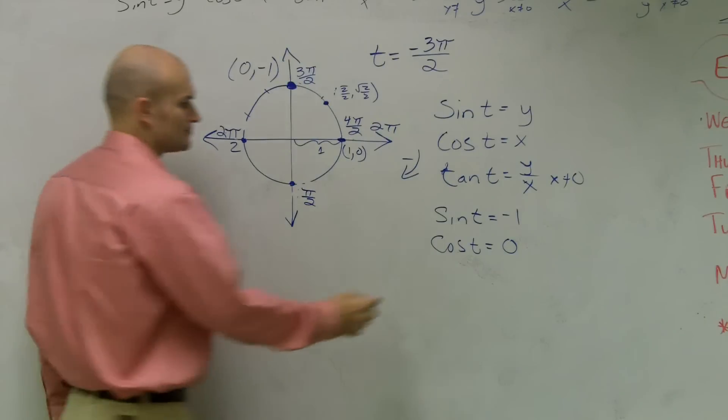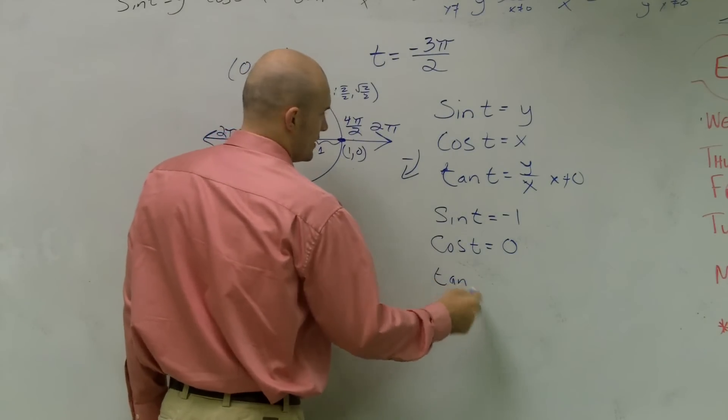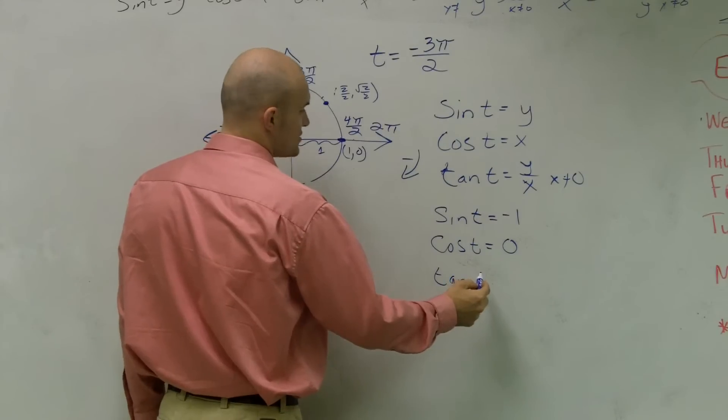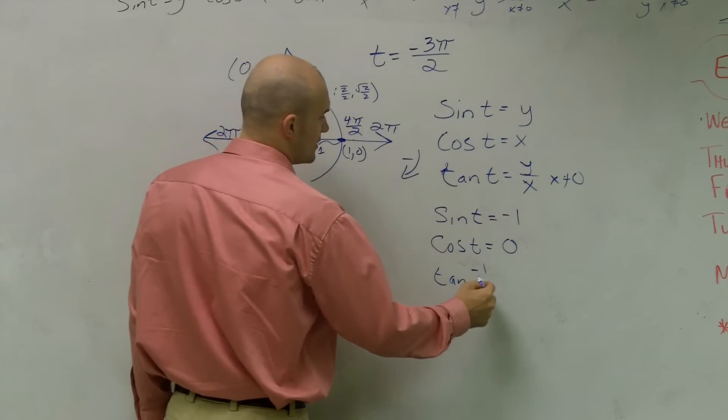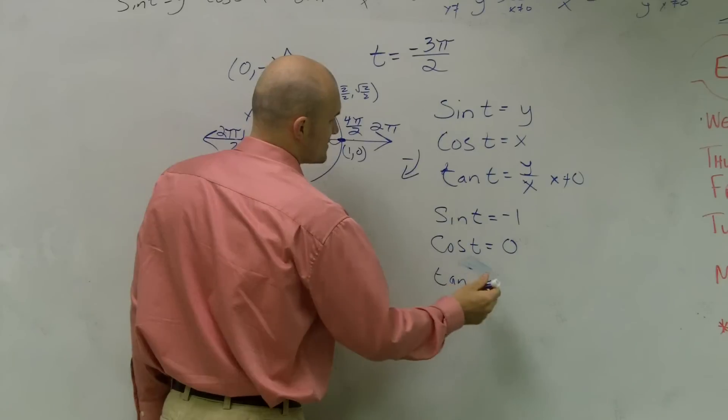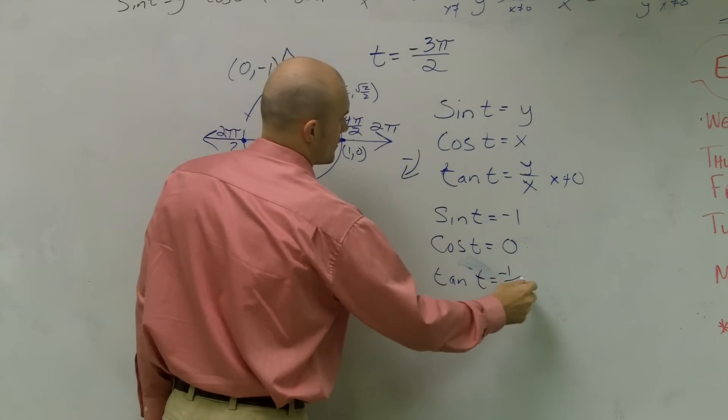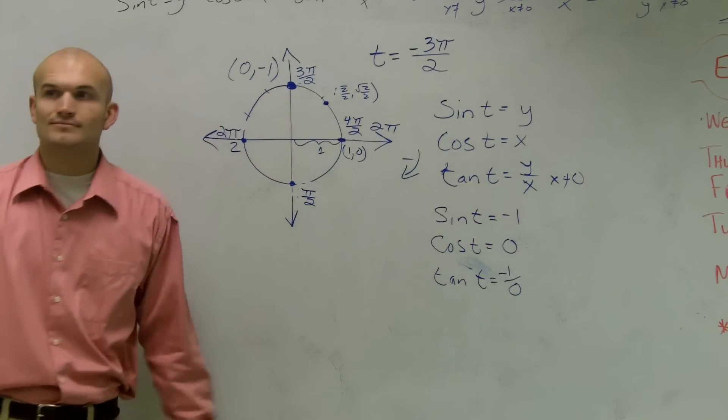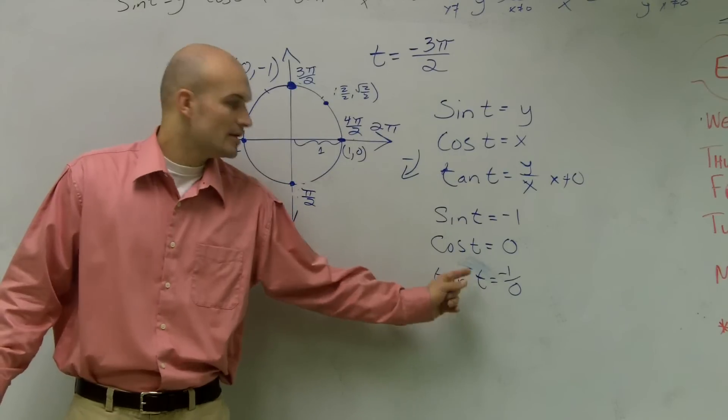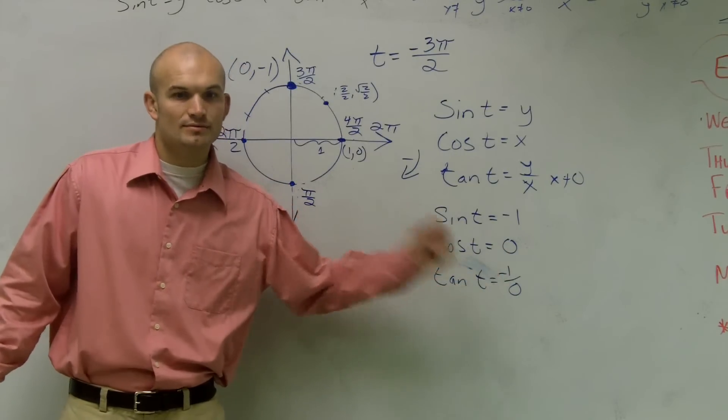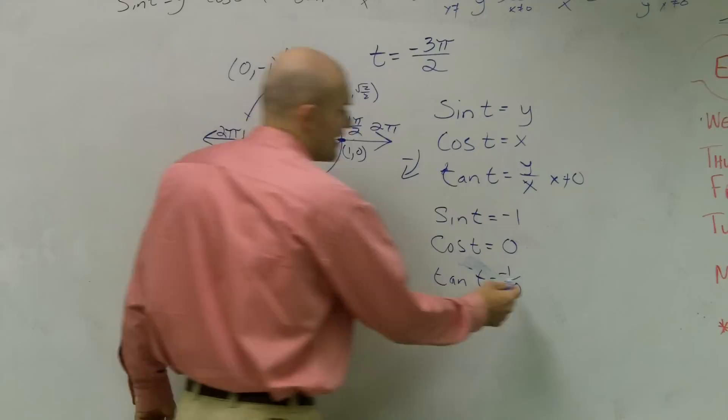And then cosine of t for this problem is going to be 0. And then the tangent is going to be negative 1 over 0. And can you divide any number by 0? No, it doesn't exist. So it's undefined.